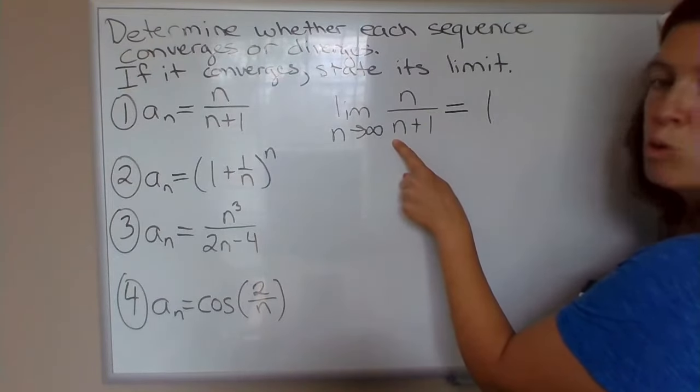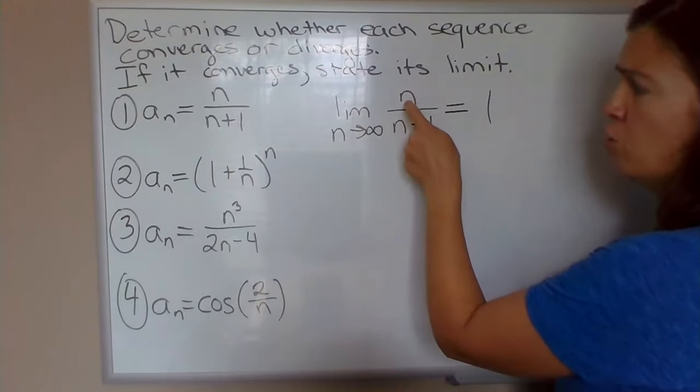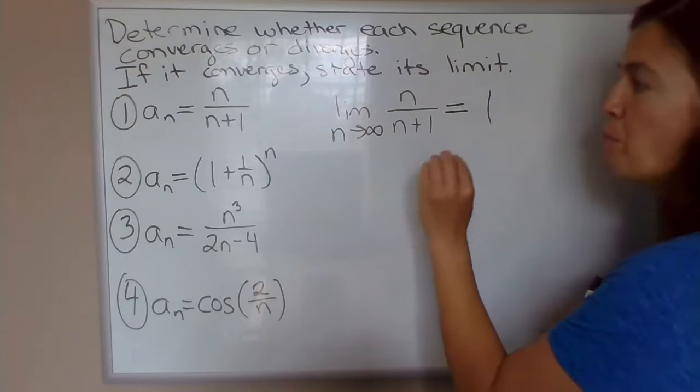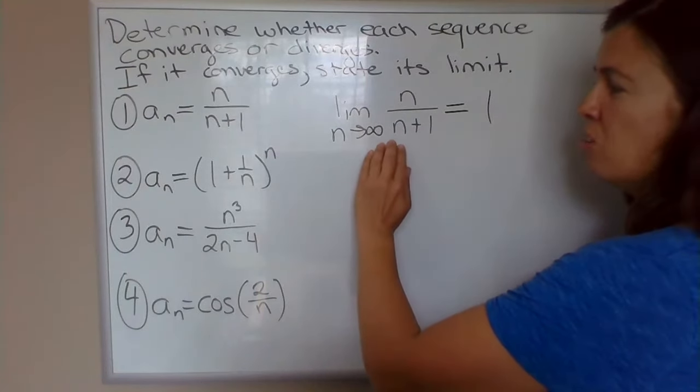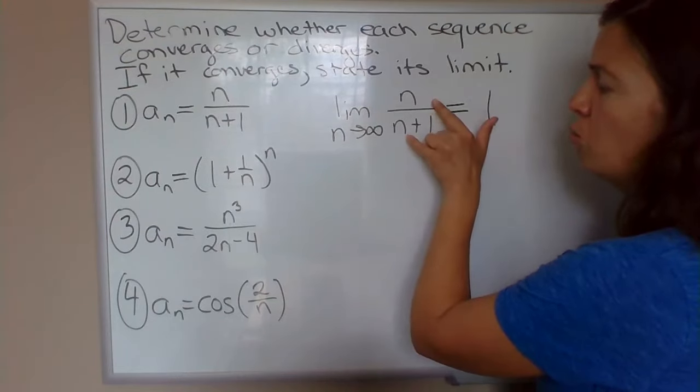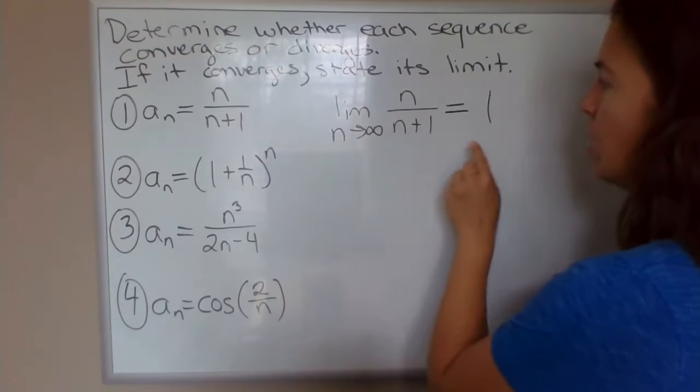You could also use L'Hopital's rule. It's got the form infinity over infinity. So you could take the derivative of the top and the derivative of the bottom, which would also give you 1 over 1. But we're going to see limits of this form a lot. And so it's really best if you can recognize rational expression, same degree top and bottom, I just do ratio of leading coefficients. It'll save you time.